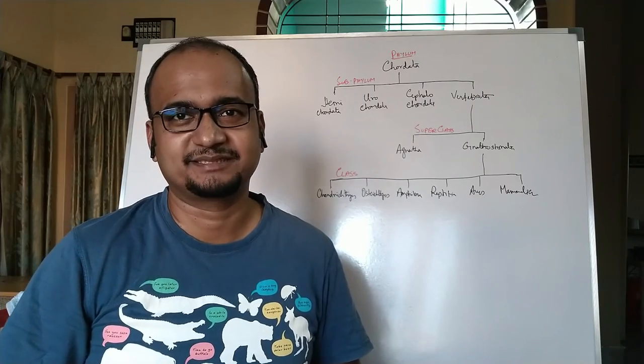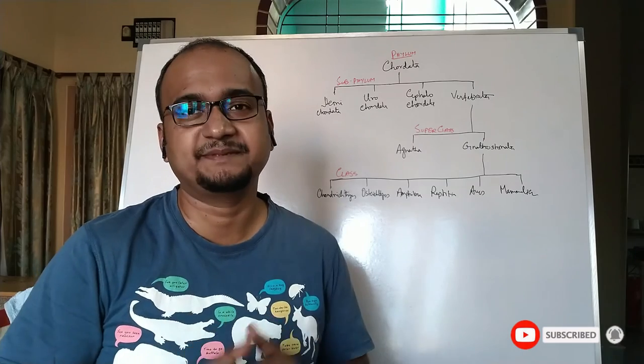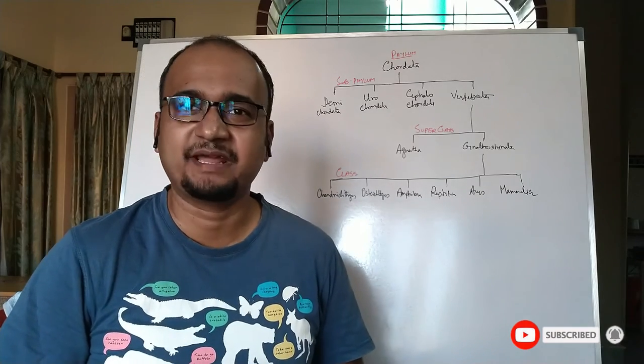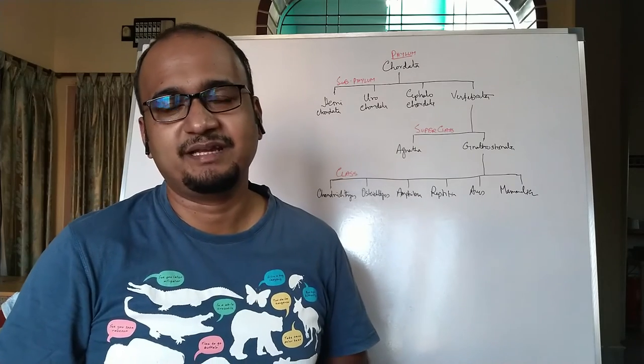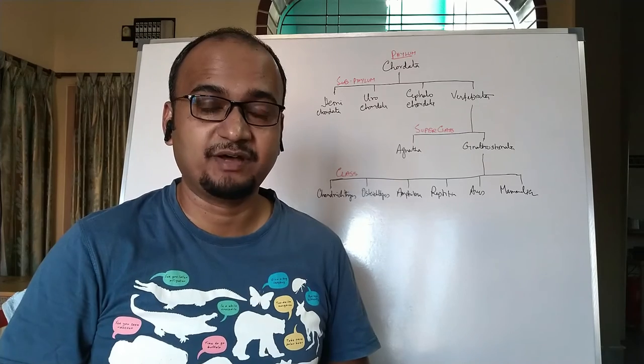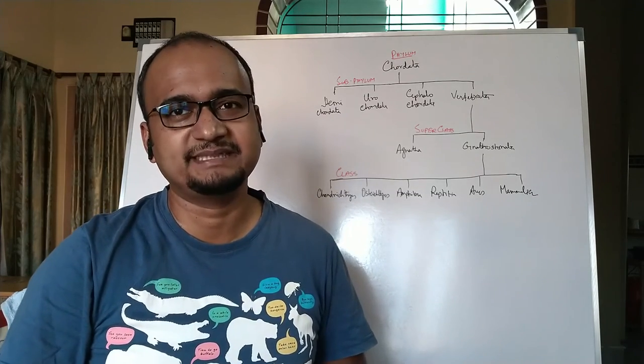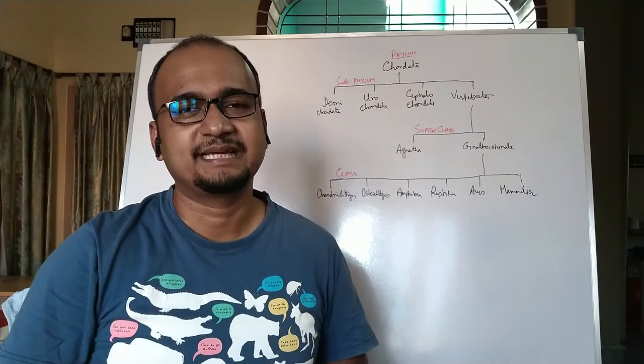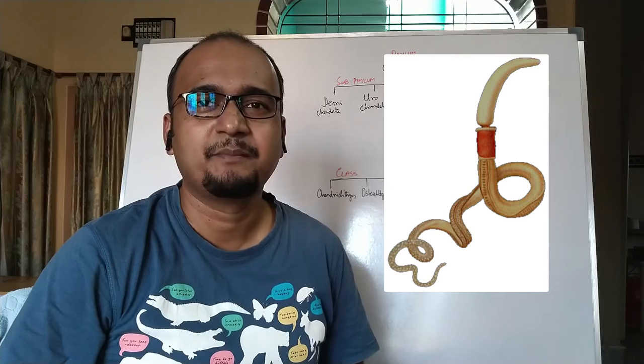Presence of buccal tube or stomochord. Notochord is absent, but nerve cord and pharyngeal gill slits are present. The larval form is called tornaria larvae and they are very similar to the bipennaria larvae of echinoderms. Due to the last two characters, some authors place them with invertebrates rather than chordates. Examples include Balanoglossus and Saccoglossus.